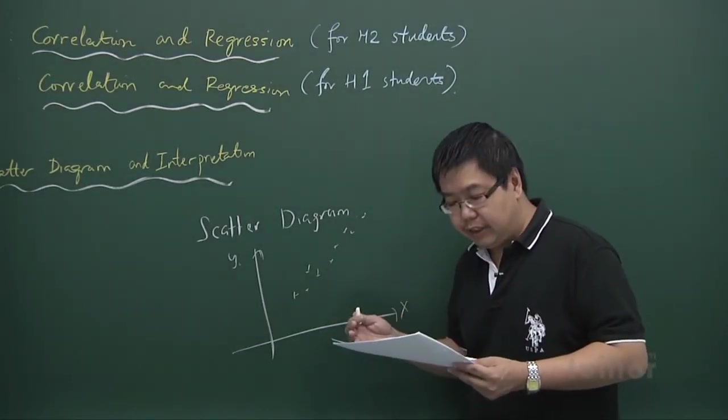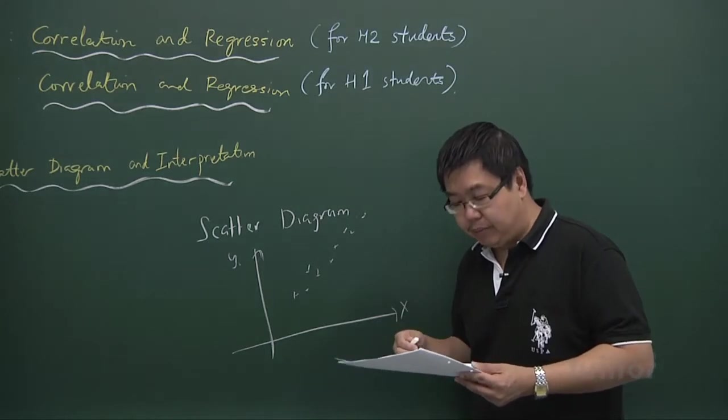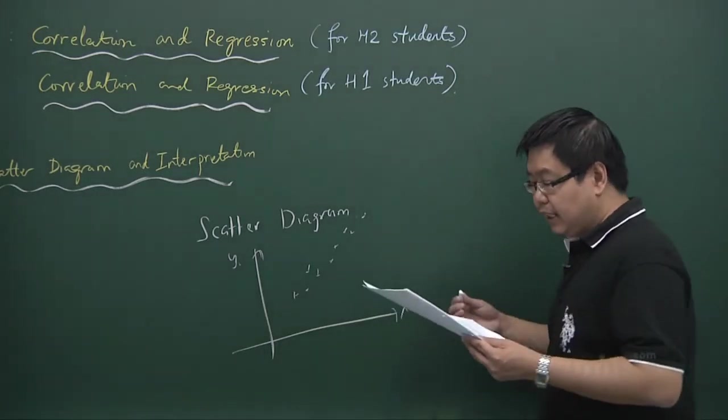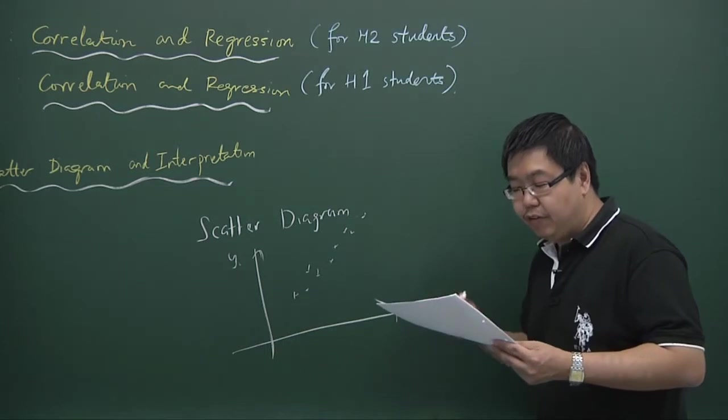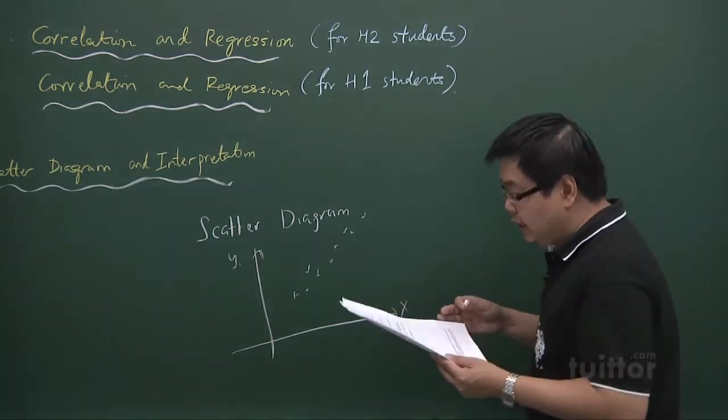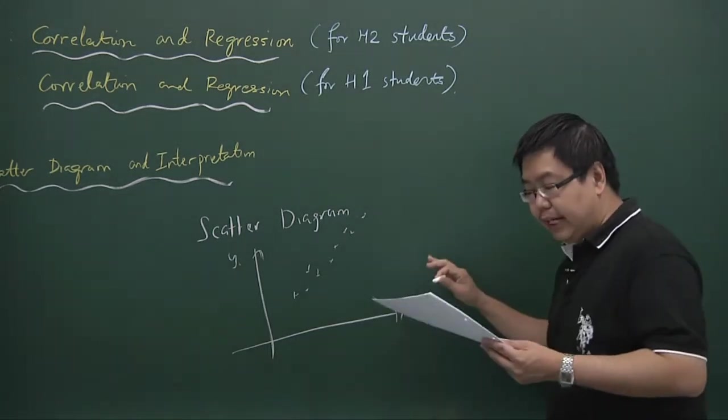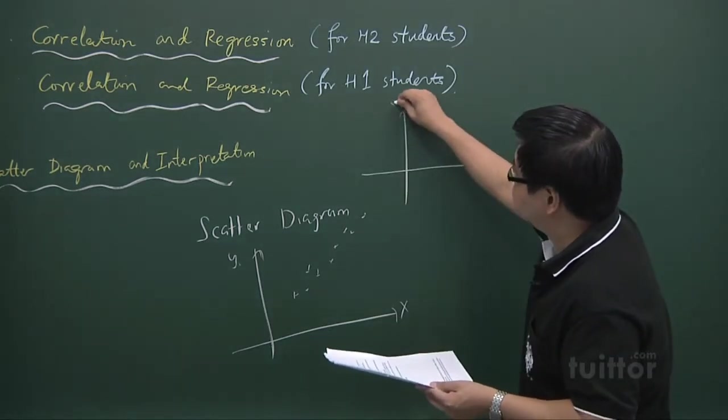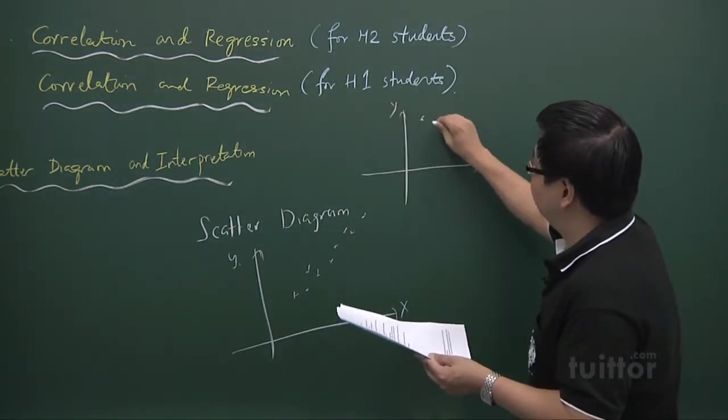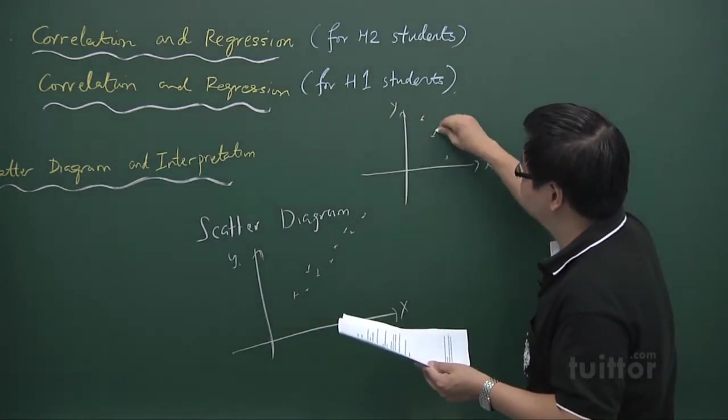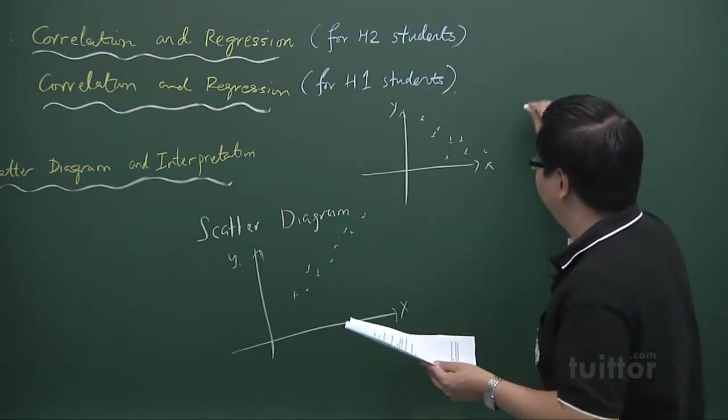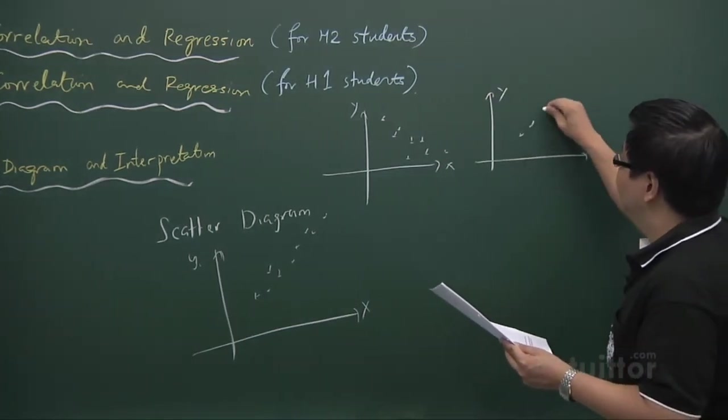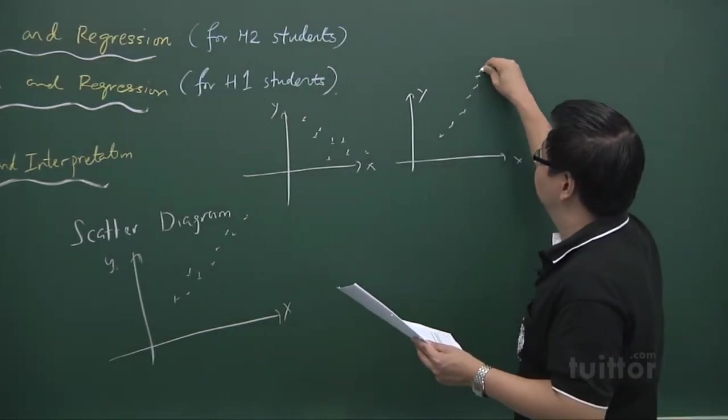Now, how do we make use of the scatter diagram? Scatter diagram has a few uses. First, it allows us to see the direction of the relationship, whether it is positively or negatively correlated. That means whether the relationship is negative or whether the relationship is positive.